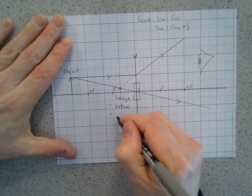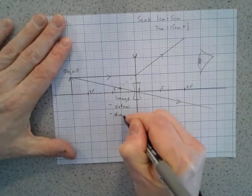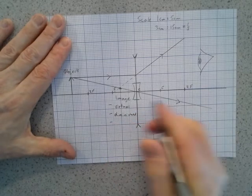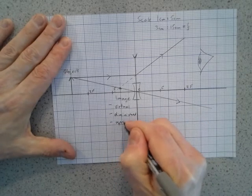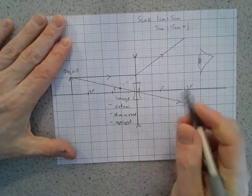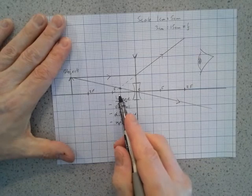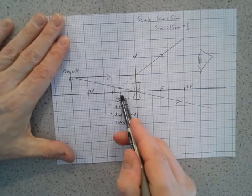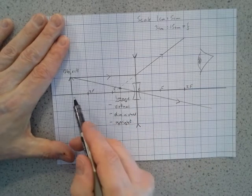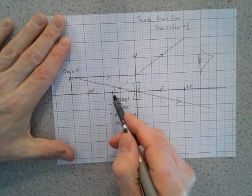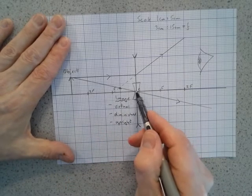It is diminished and it is upright. Its position, well it's on the same side of the lens as the object and it's in between the principal focus and the lens.